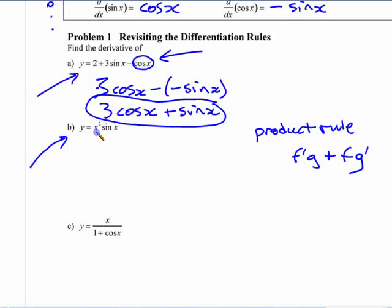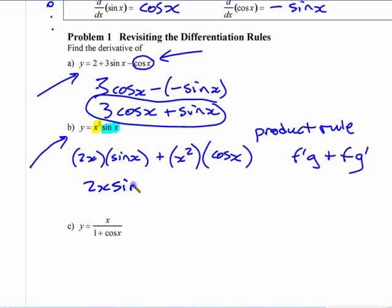If you want to come up with the derivative of this, then you have two functions here. You have this times this. Those are your two functions that are multiplied. You need the derivative of x squared, which is 2x, times sine x. And you need the first function, which is x squared, times the derivative of sine x, which is cos x. So you could write it like this, 2x sine x plus x squared cos x.